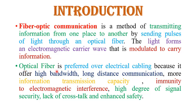Optical fiber is mostly preferred over copper wire cable or electrical cable because it offers high bandwidth. Optical fiber is used for long distance communication, has more information transmission capability, provides immunity to electromagnetic interference, and has a high degree of signal security, lack of crosstalk, and enhanced safety. These features make optical fiber more demanding in the market.